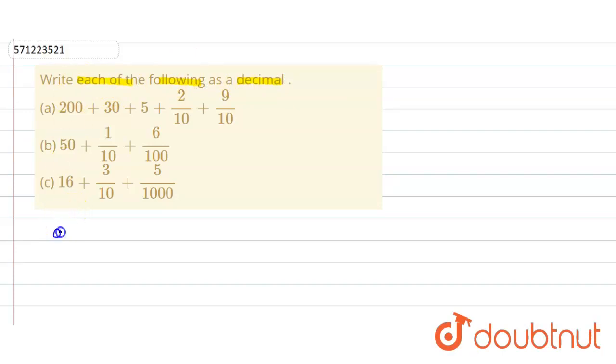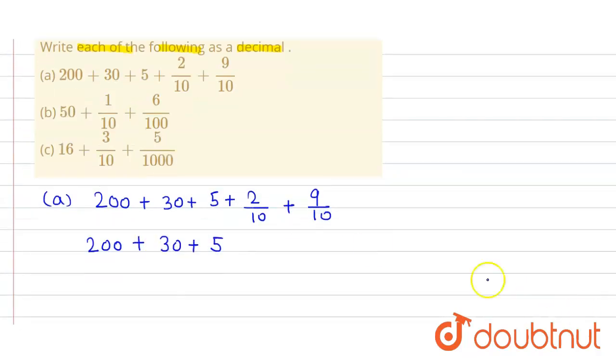So here the first part of the question is 200 plus 30 plus 5 plus 2 by 10 plus 9 by 10. So here it will be equal to 200 plus 30 plus 5 plus here this 2 by 10 can be represented as 0.2 because there is only one zero in the denominator so we get only one digit after the decimal.